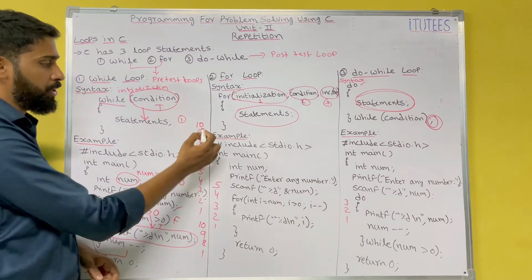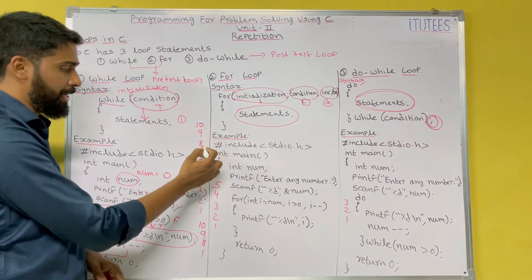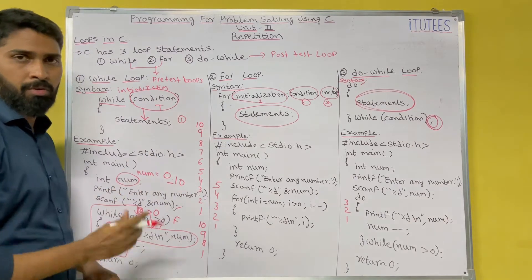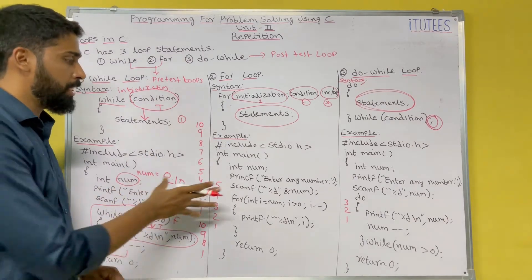At that point the output is 10, 9, 8, 7, 6, 5, 4, 3, 2, 1. Now we will see the same program using the for loop.